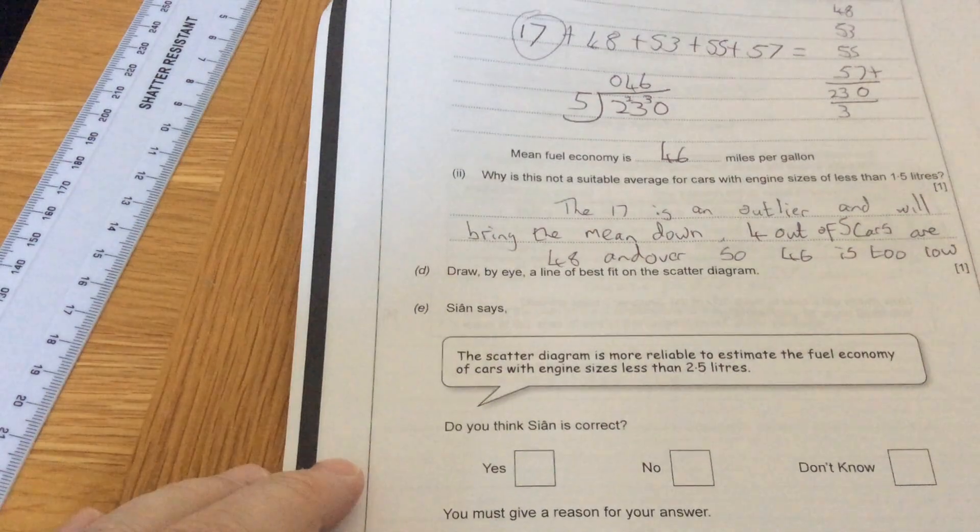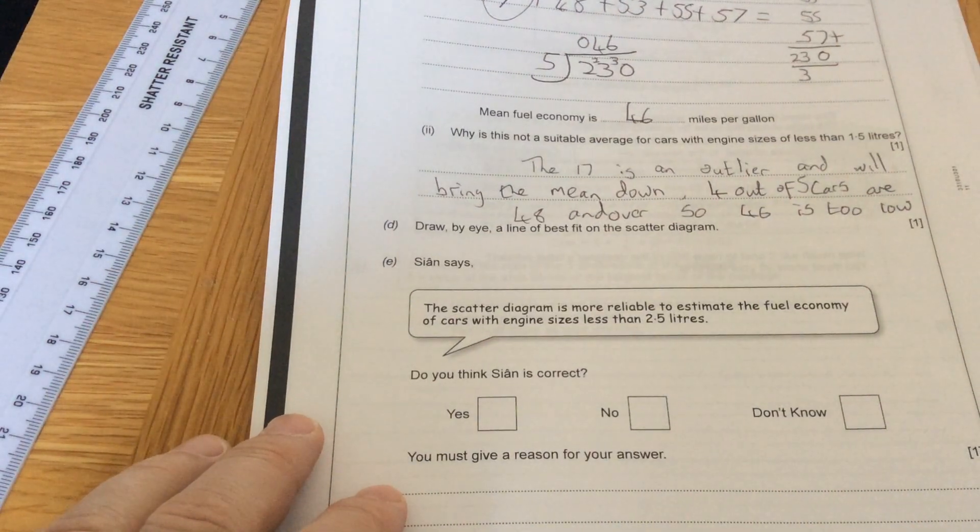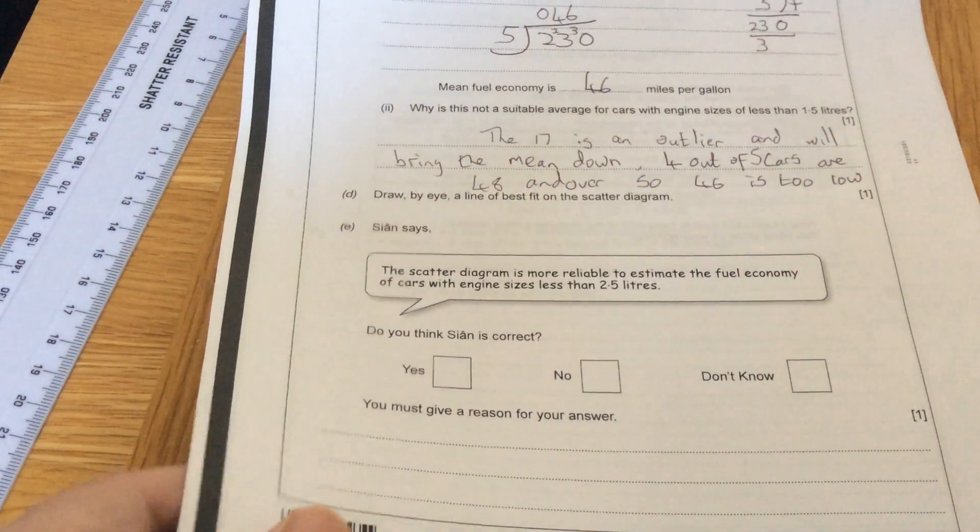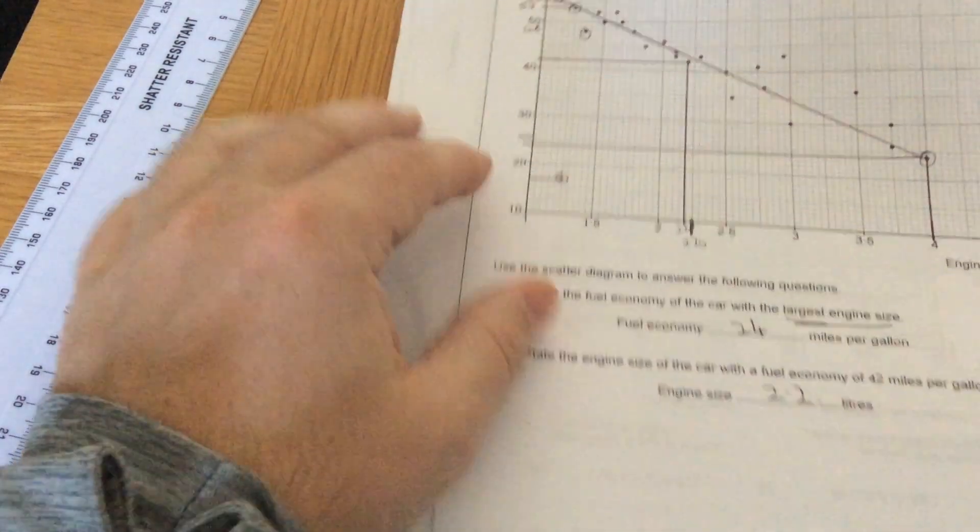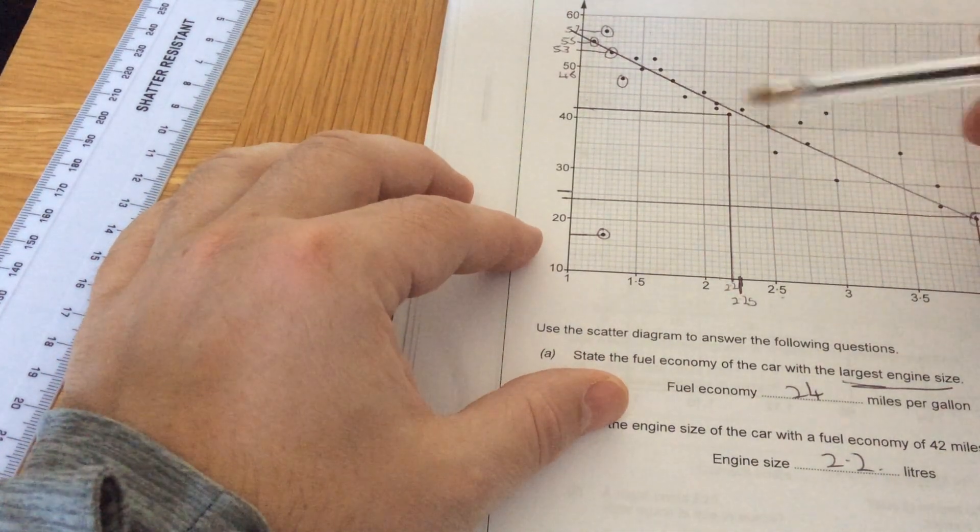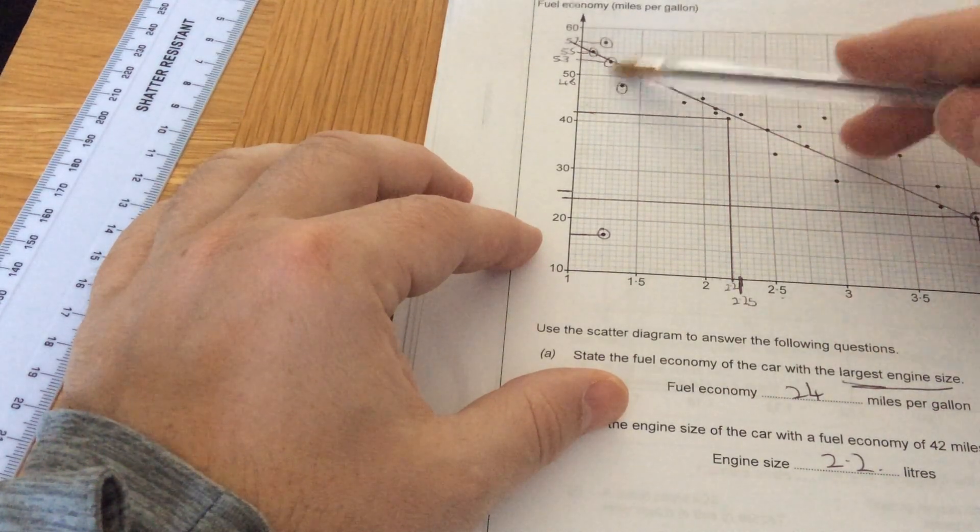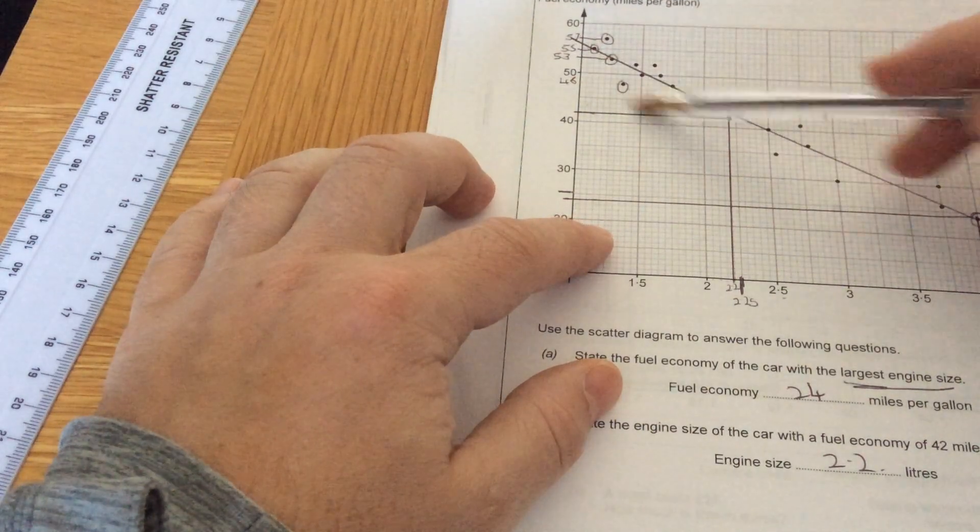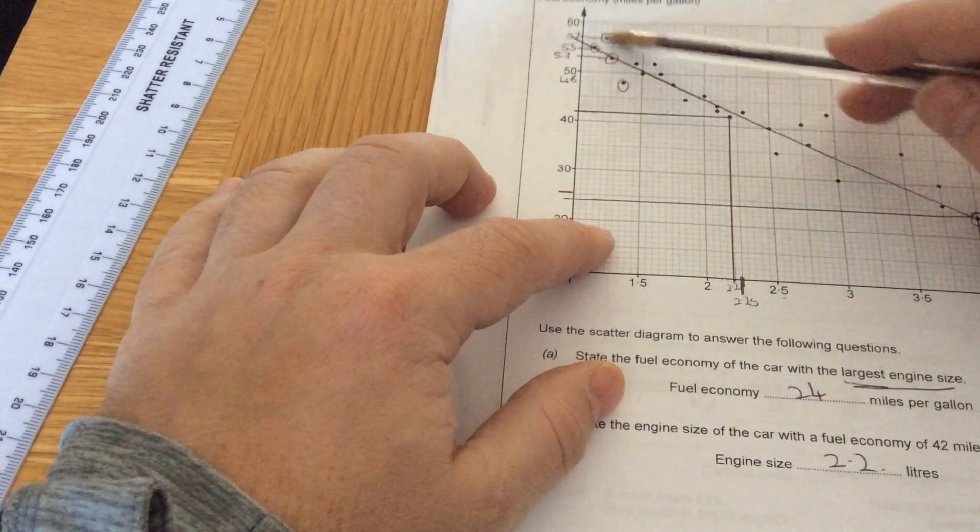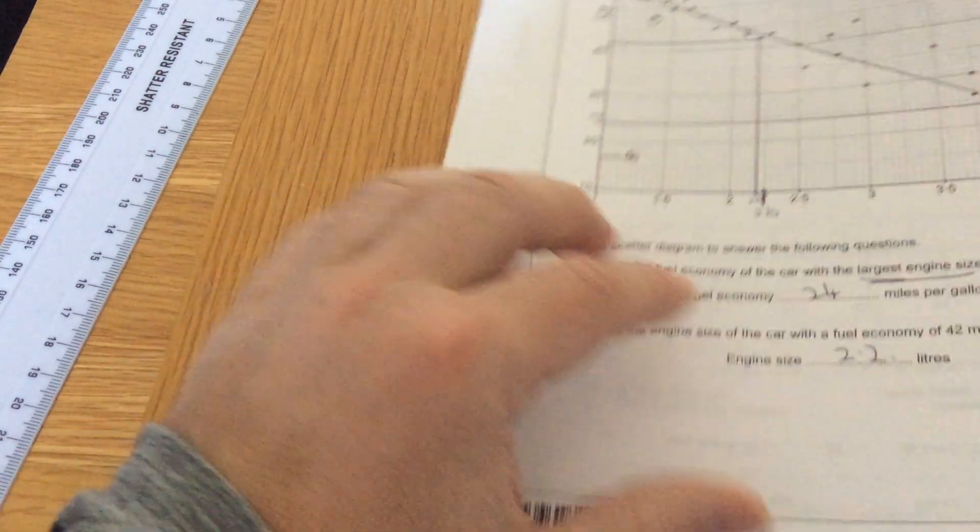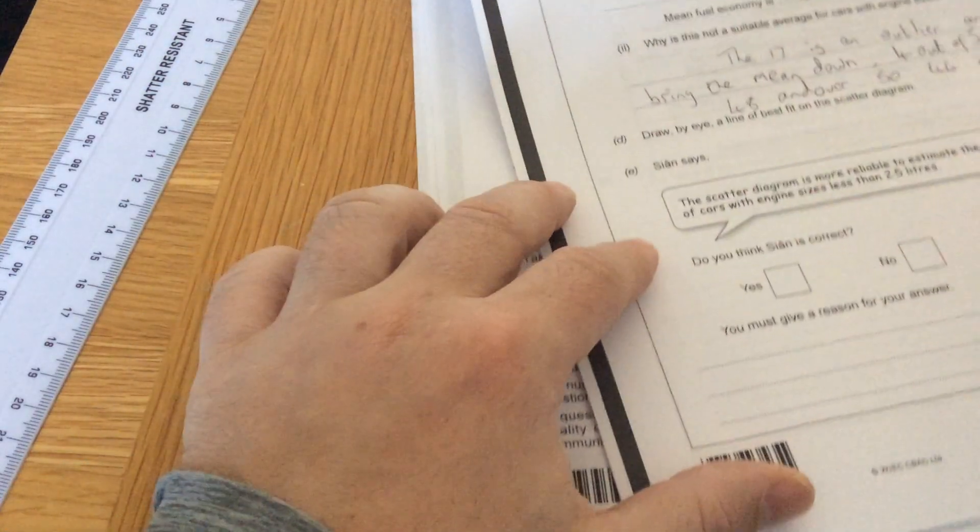Sian says the scatter diagram is more reliable to estimate the fuel economy of cars with engines less than 2.5 litres. Do you think Sian is correct? So engines less than 2.5 litres. If we look at engines less than 2.5 litres, apart from that one value there, they are all pretty close to the line of best fit. So it means they are all pretty much on target. So I would say yes.